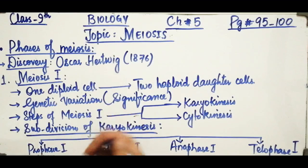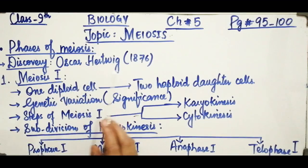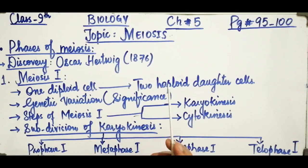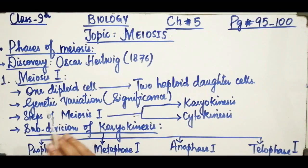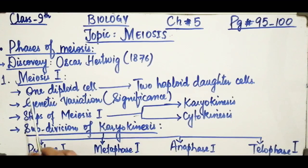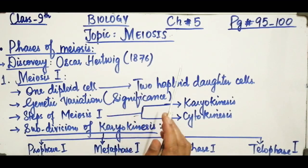The preparatory steps of meiosis are identical to the interphase of mitosis. Interphase consists of G1, S phase, and G2. After interphase, Meiosis I and Meiosis II occur, and finally four daughter cells are produced. Meiosis I is basically the process in which homologous chromosomes separate, and Meiosis II follows to complete the division.